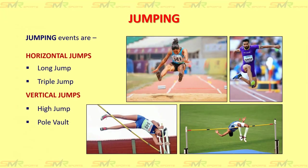Now let's move towards jumping events. When we talk about jumping, we have two types of jumps: horizontal jumps and vertical jumps. In horizontal jumps we have long jump and triple jump. In vertical jumps we have high jump and pole vault. As you can see on the screen, the top two pictures are long jump and triple jump, and the bottom two pictures — the left is pole vault and the right one is high jump.